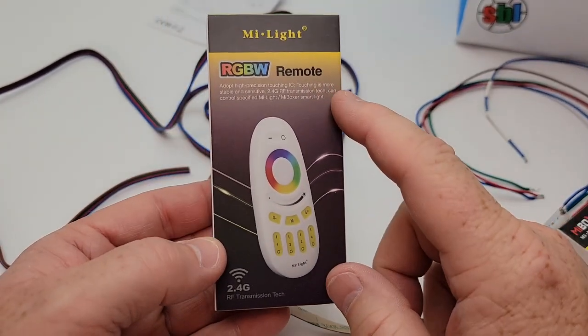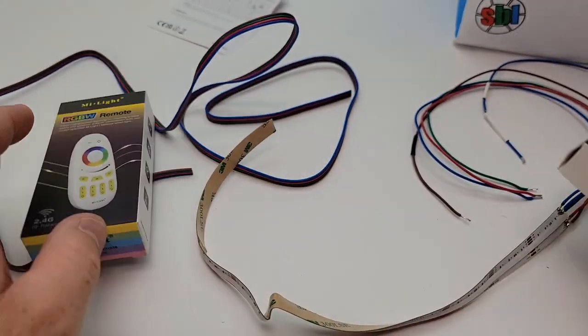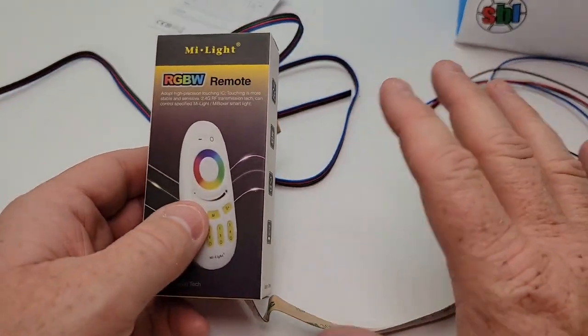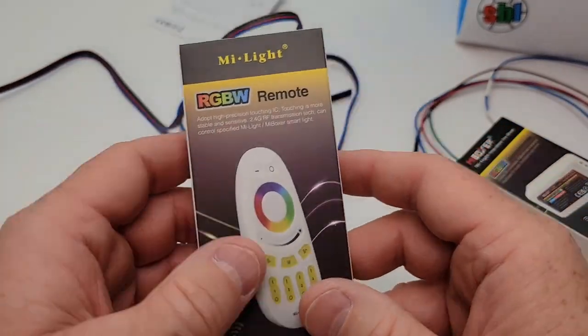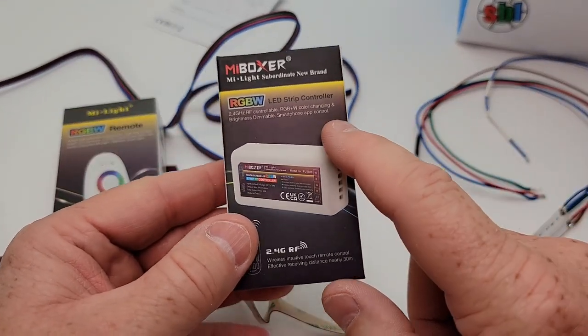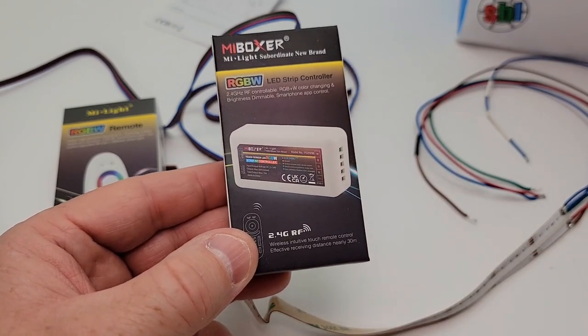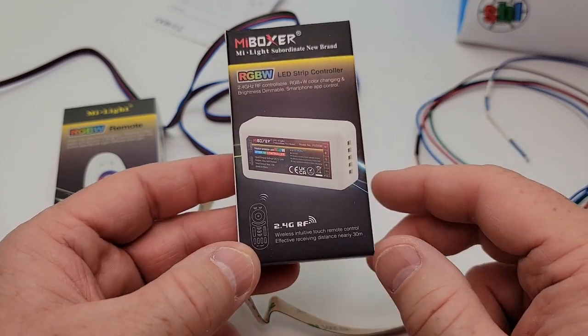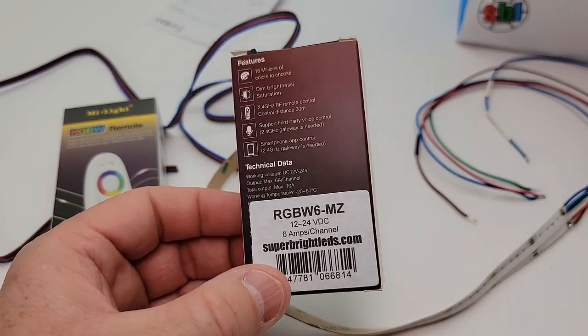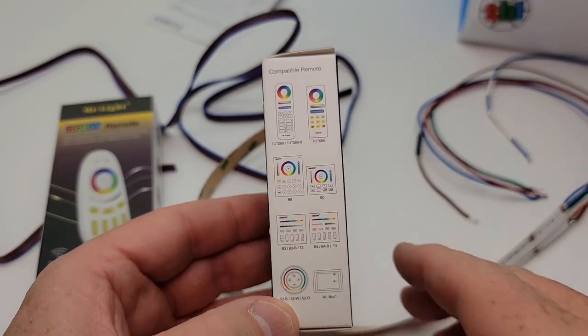And here's the remote. It's the red, green, blue, 2.4 gigahertz. Now, it doesn't connect to your local Wi-Fi. It just uses a Wi-Fi between the two components. I'm not sure what's going on there. This is the, I told you you need to buy one of these for each cabinet. This is the controller, 2.4 gigahertz. It does say they have more remotes. I didn't see a whole bunch of remotes.